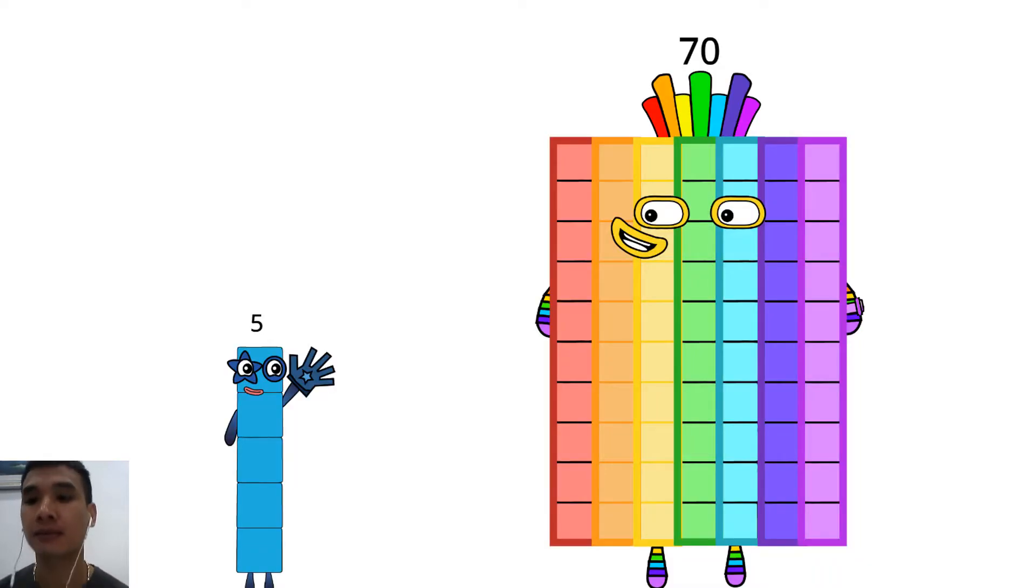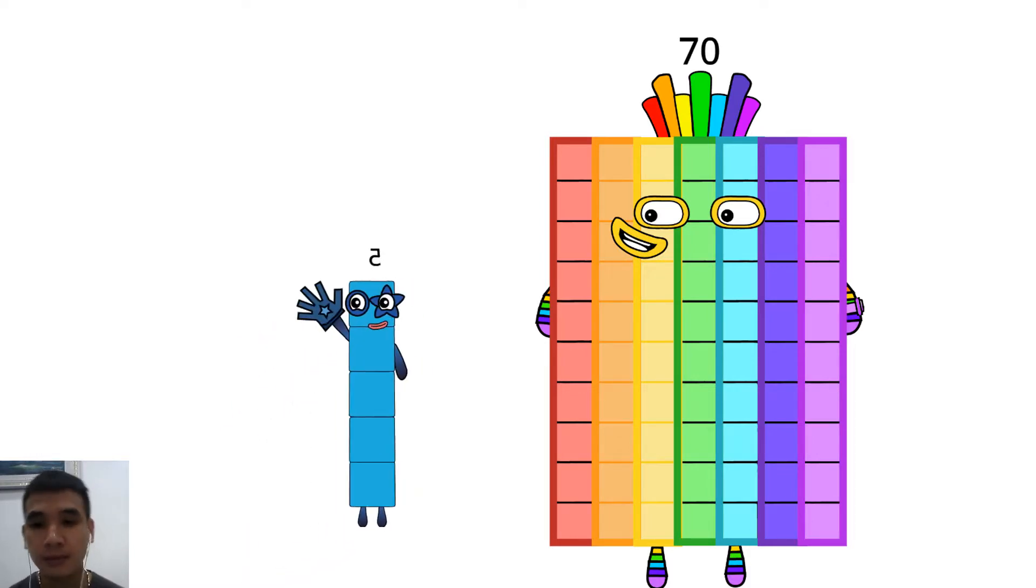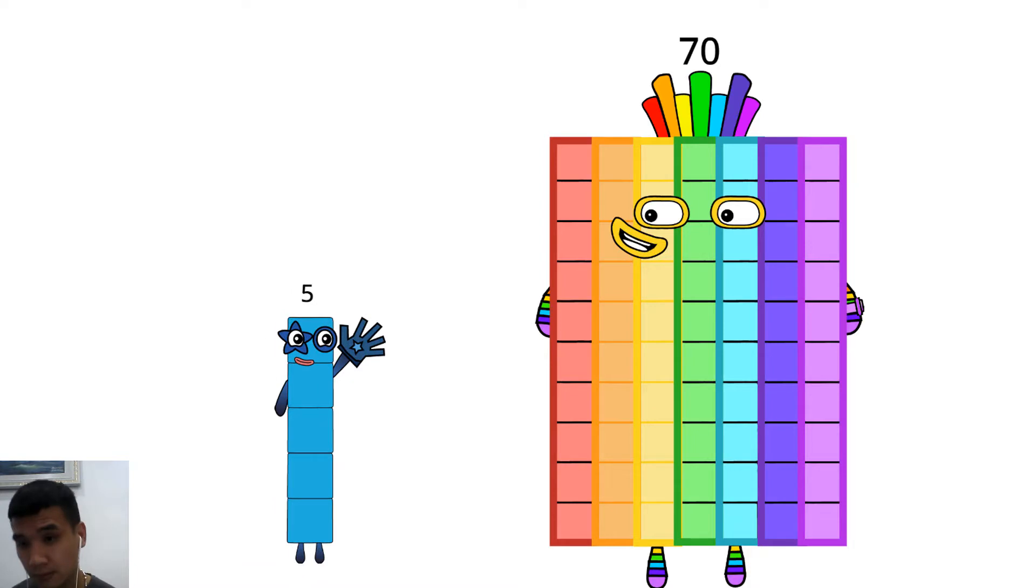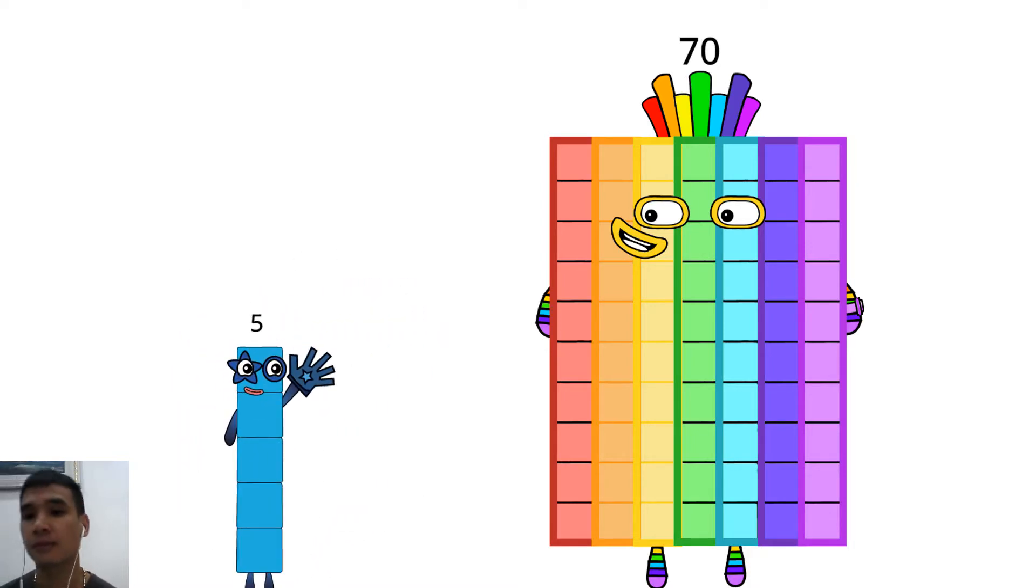High five to the side. Up above. Down below. Too slow. High five to the side. Up above. Down below. Too slow. High five to the side. Up above. Down below.